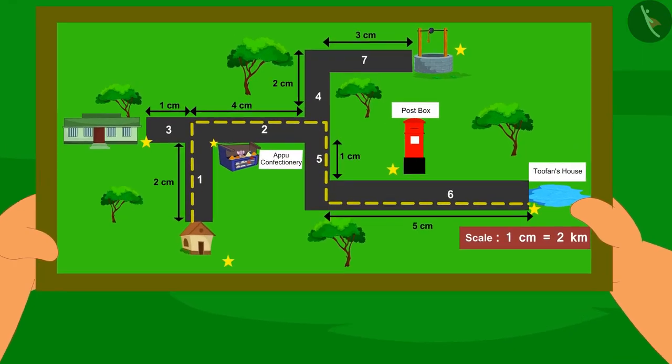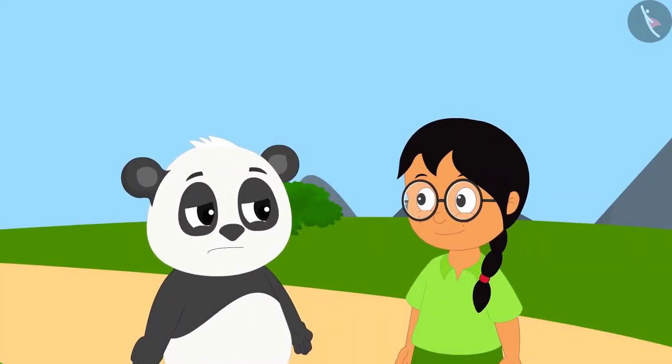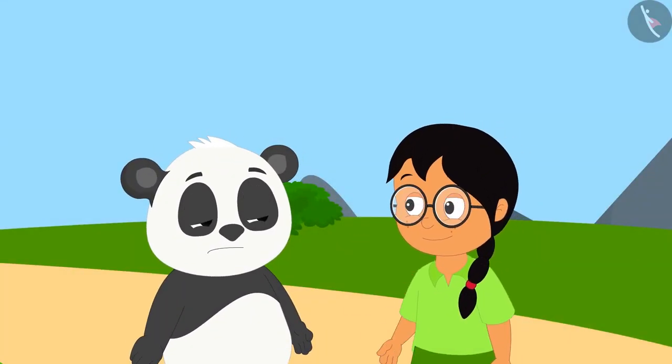As soon as Meenu saw the map, she told Golu that he would have to go about 4 km more.